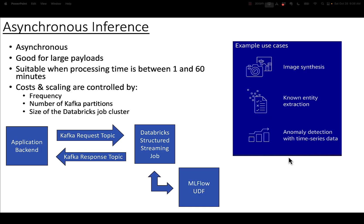The next type of inference is asynchronous inference. This is when you have a large payload — you're going to submit a bunch of data, you're going to want Databricks to listen to however you're submitting the data, and then you're going to use an MLflow UDF to react to the data and call predict, then respond. Typically we do this over Kafka: the asynchronous back-end call dumps data into Kafka, a structured streaming job picks it up, the MLflow UDF gets engaged, and then we drop the result on a different response topic.